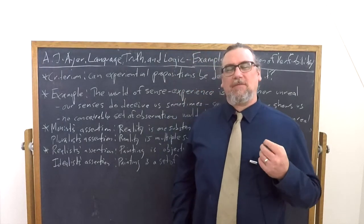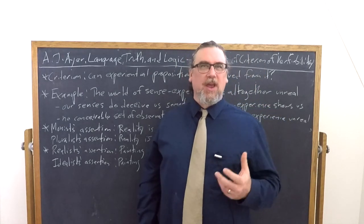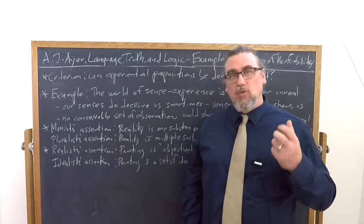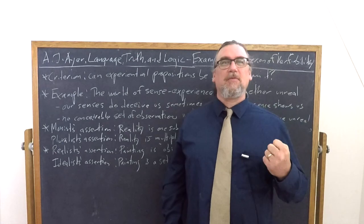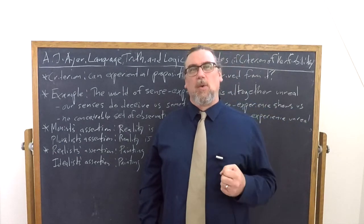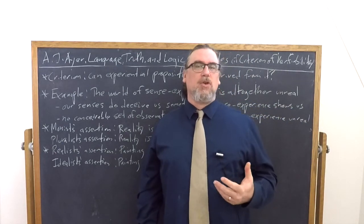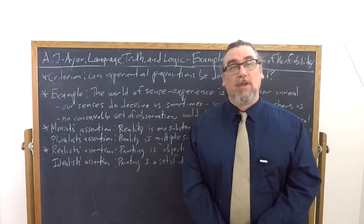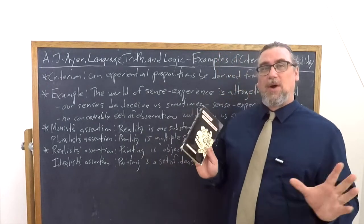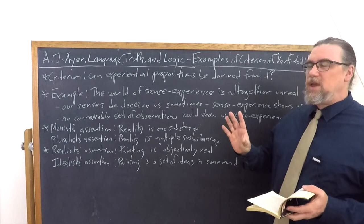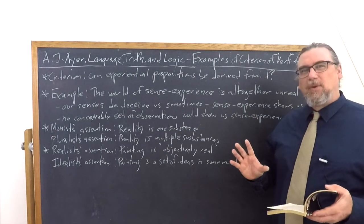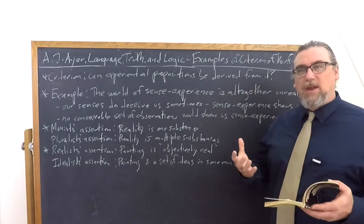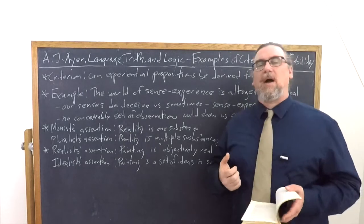In Chapter 1 of Language, Truth, and Logic, A.J. Ayer, after setting out the Criterion of Verifiability, which is really one of the central concepts and fulcrums of this entire work, will provide us with some useful examples so we can see how this criterion is actually applied. He'll give you many more throughout the rest of the work, but these are the three sets of examples that follow immediately on setting out the Criterion of Verifiability.